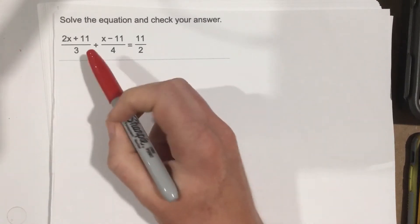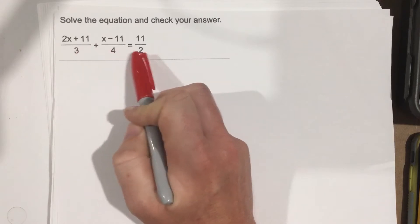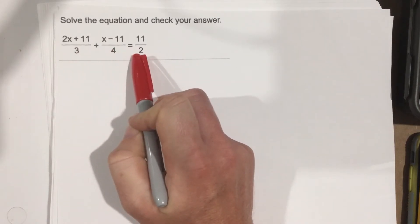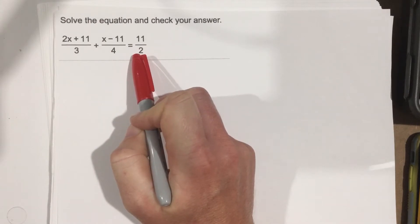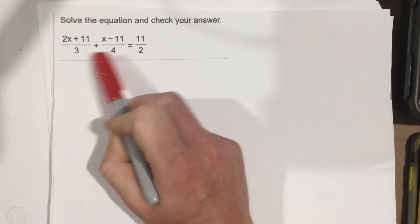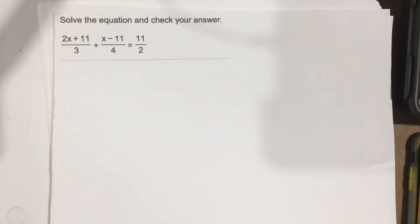How do we cancel the fractions out? We'll find a common denominator between these three terms. The common denominator is 12 because 12 is divisible by 2, 4, and 3. So let's multiply the entire equation by 12.